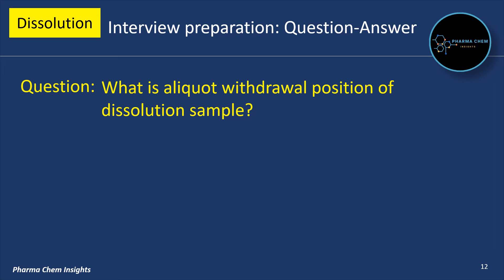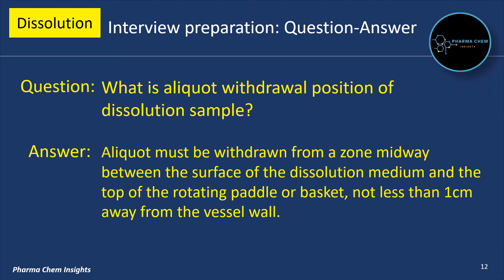What is the aliquot withdrawal position of a dissolution sample? The aliquot must be withdrawn from a zone midway between the surface of the dissolution medium and the top of the rotating paddle or basket, not less than 1 cm away from the vessel wall.